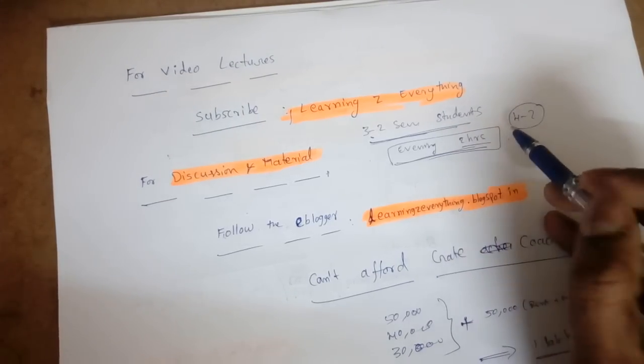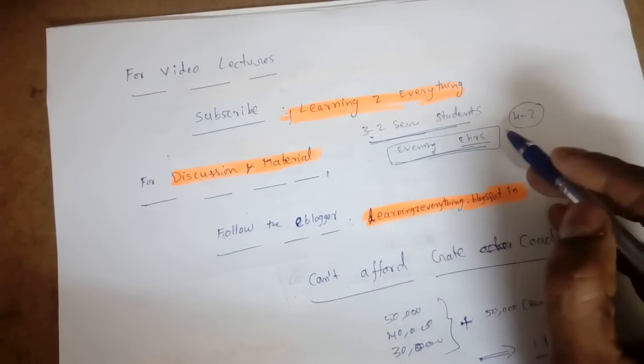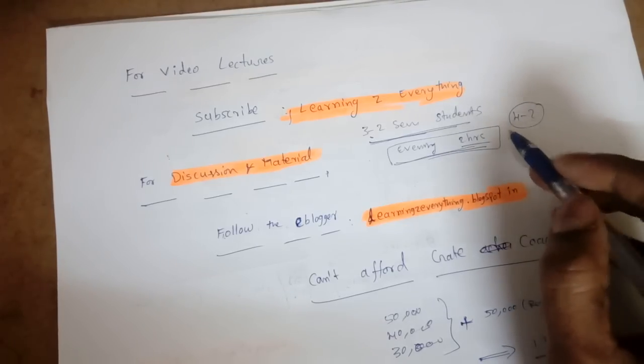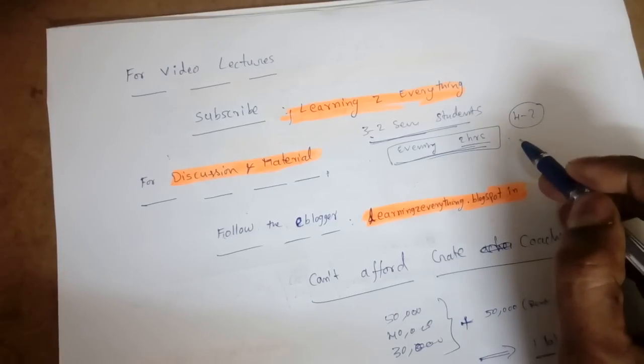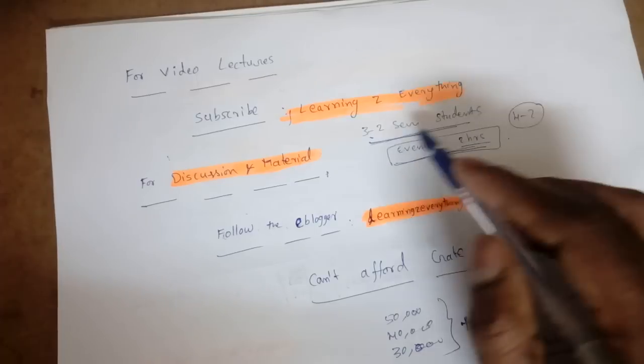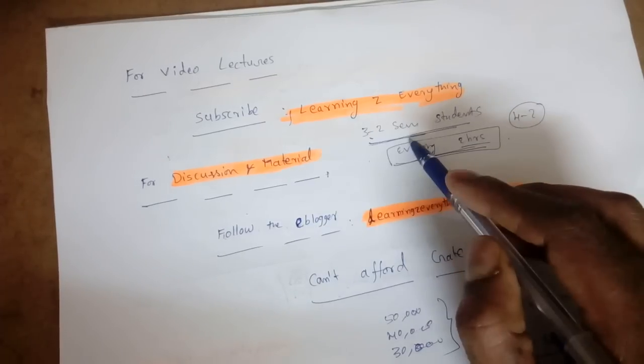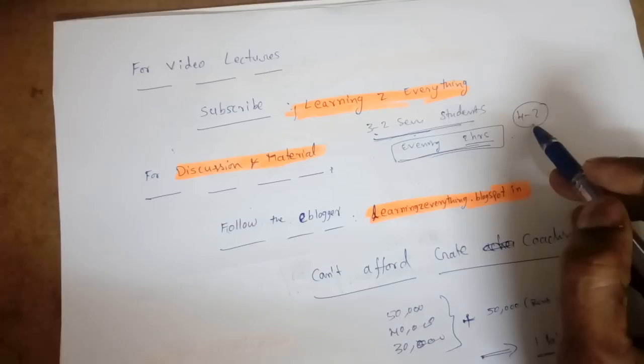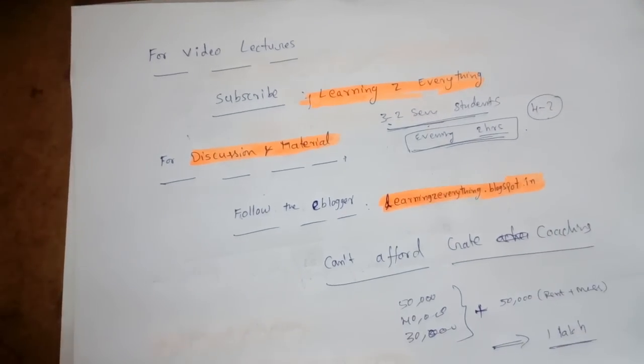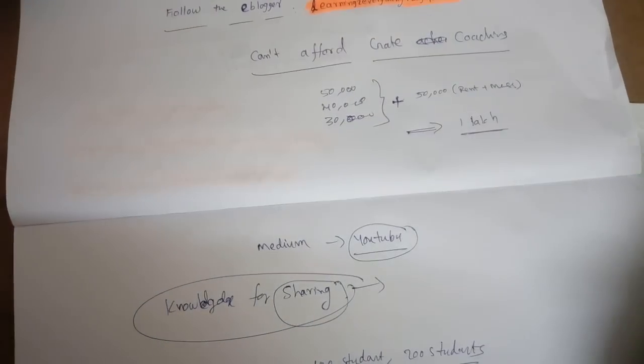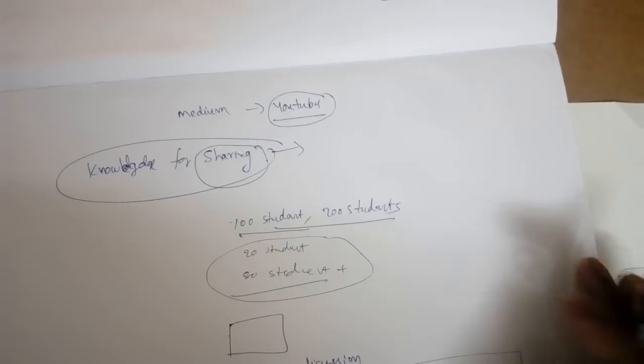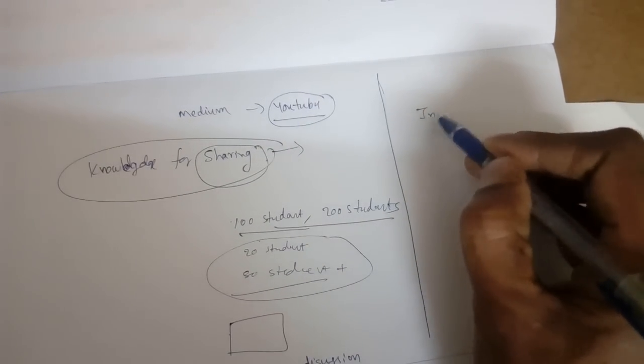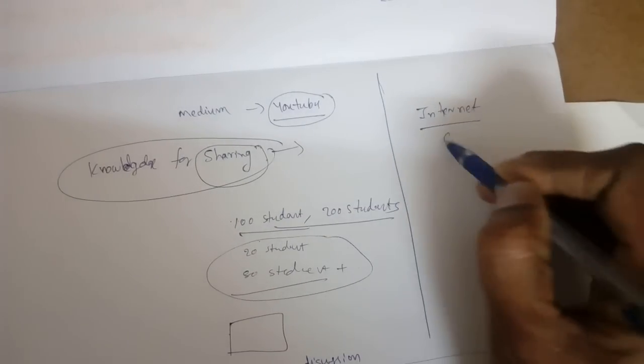By after 4-2 you can join GATE institute preparation, but again you have to pay money. Why not study from now onwards and you can easily get a good rank? How can you believe we can teach? It's very simple: just follow either one or two subjects. It's free of cost, only we need internet connection.